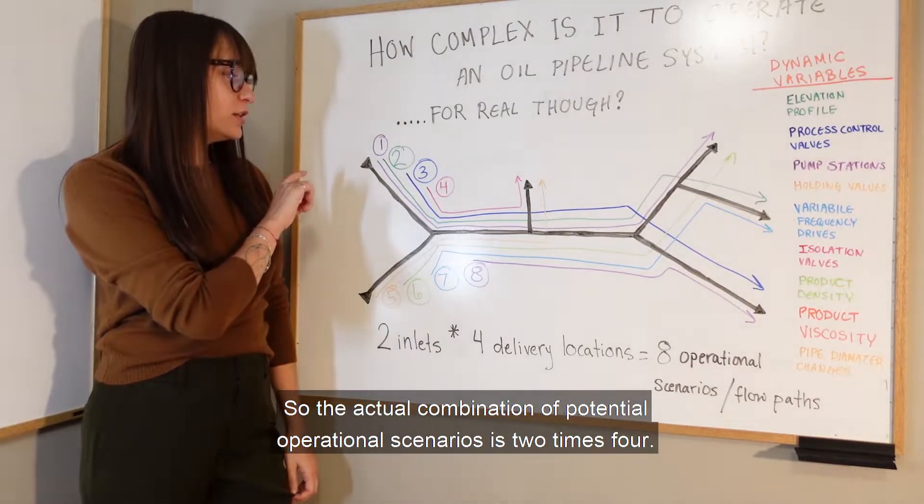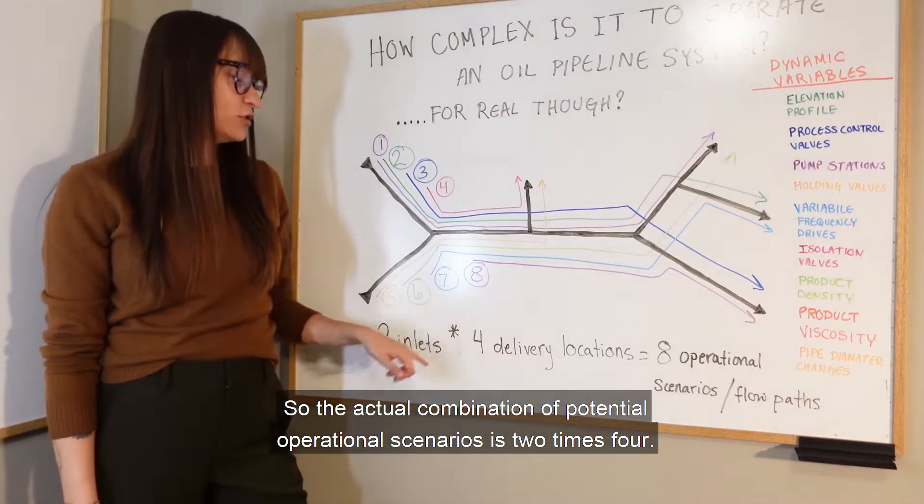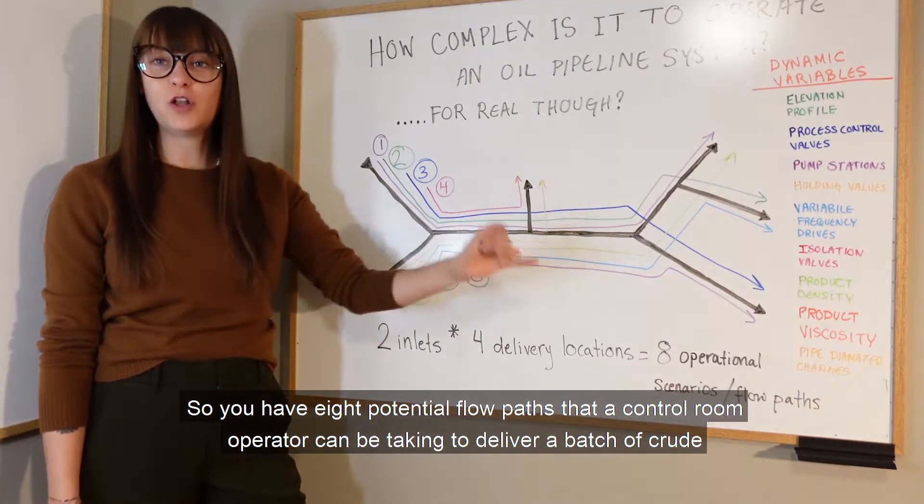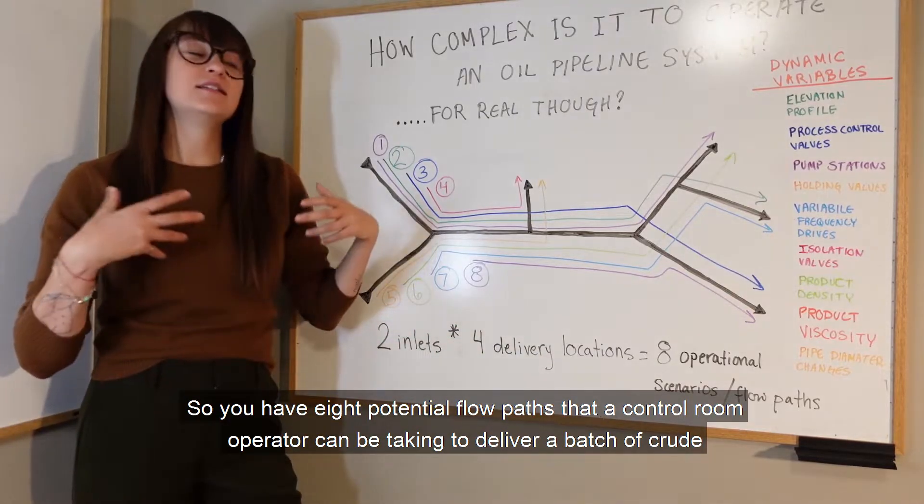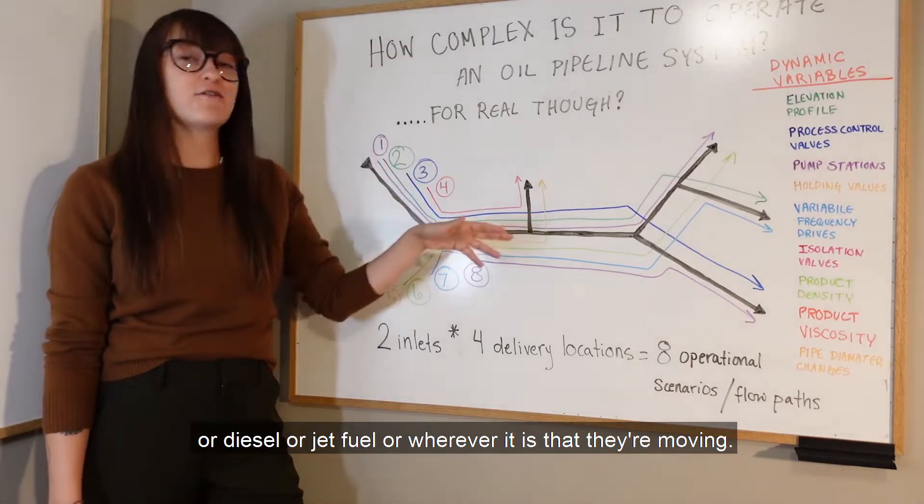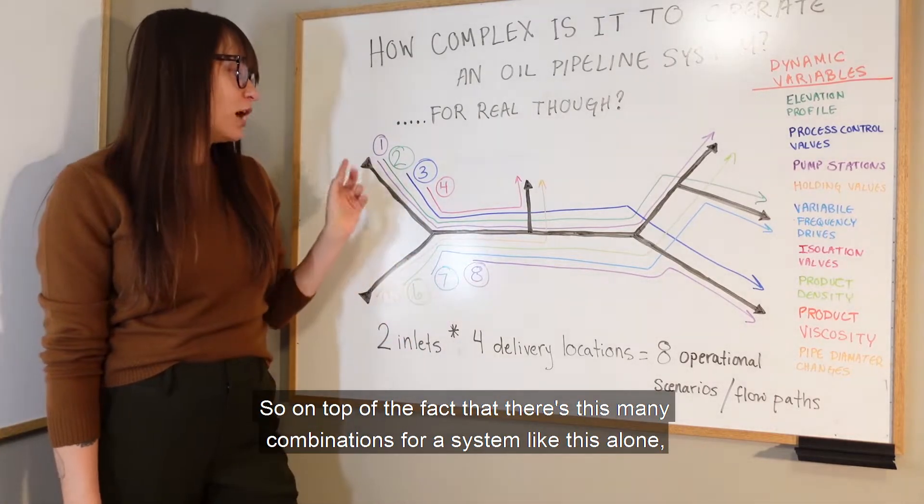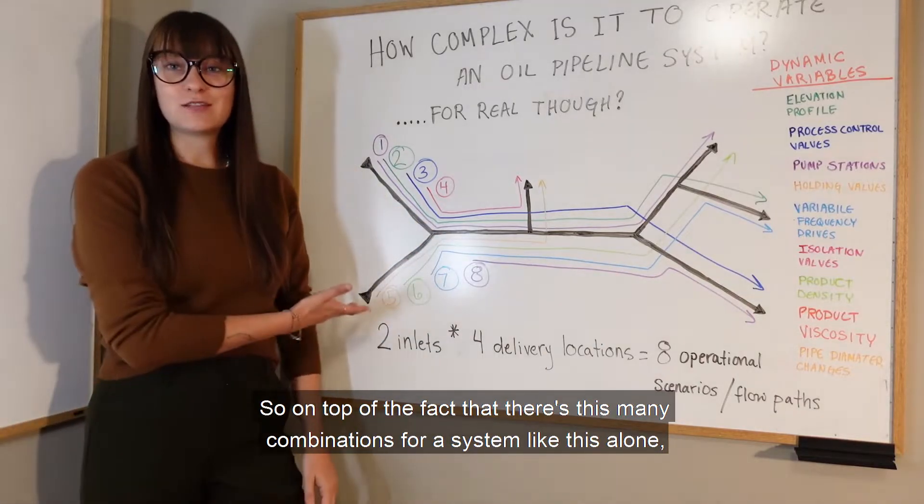The actual combination of potential operational scenarios is two times four. So you have eight potential flow paths that a control room operator could be taking to deliver a batch of crude or diesel or jet fuel or whatever it is that they're moving.